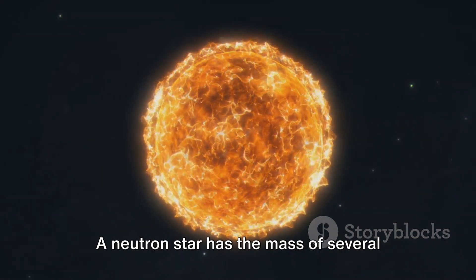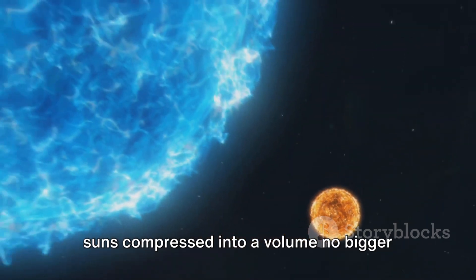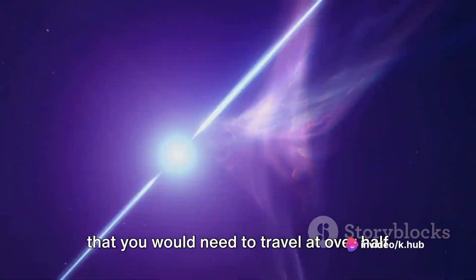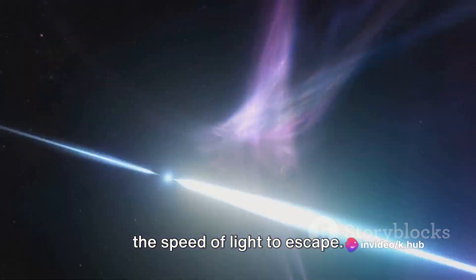A neutron star has the mass of several suns compressed into a volume no bigger than Manhattan. The gravity on its surface is so strong that you would need to travel at over half the speed of light to escape.